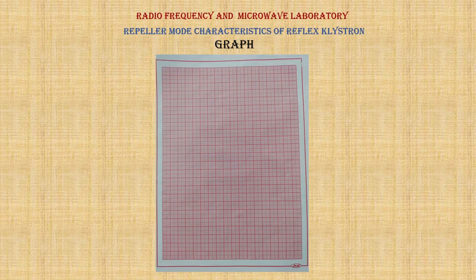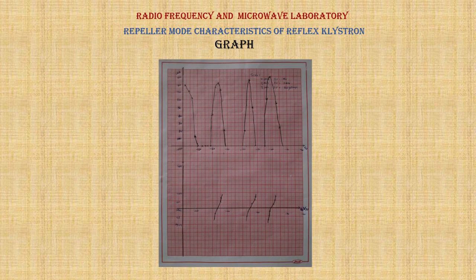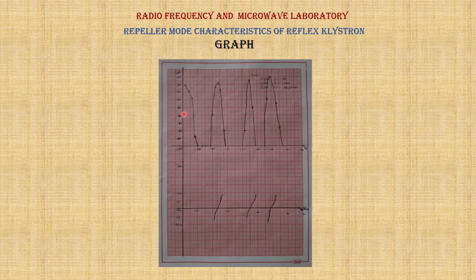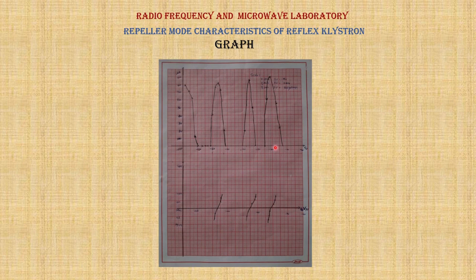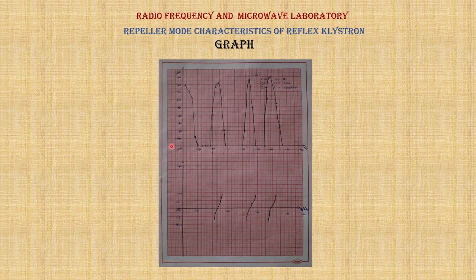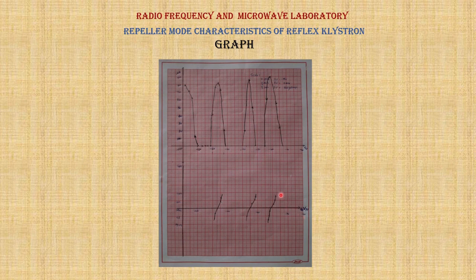Now coming to the graph, by taking linear graph we are going to plot the values. After plotting the values in this manner we will get results. Here it is off mode and these are the modes: mode 1, mode 2, mode 3, mode 4. Like this we will get up to 6 modes. It is input repeller voltage versus current obtained at ammeter and it is the frequency response to the repeller voltage. This frequency may vary a little bit like 1 gigahertz.